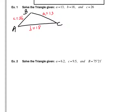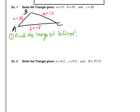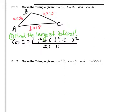Step one: find the largest angle. The largest angle will be C, because 26 is the largest side and it is across from angle C. Since we're finding angle C, we use the formula: cosine of C equals A squared plus B squared minus C squared, all over 2 times A times B. Plugging in: A is 13, B is 18, C is 26, and 18 and 13 go in the denominator.